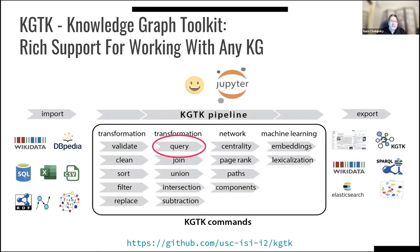KGTK is a toolkit with a very large number of commands. On the left, there are import commands to extract data from common formats such as Wikidata, DBpedia, SQL, and so on. Then you can transform in various ways: validate, clean, sort, filter, replace. The highlighted command in this presentation is query. There are also network analysis commands and machine learning commands — for example, to learn embeddings or generate lexicalizations for nodes. Finally, you can export into other formats. Below is the URI for our GitHub.